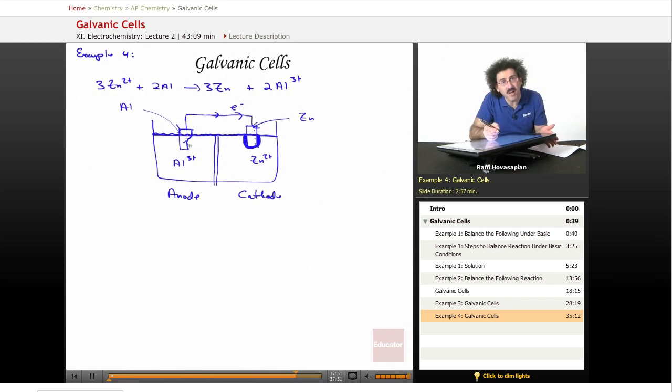The aluminum starts to dissolve. When aluminum gives up its electrons, it turns into aluminum ion. So now a bunch of aluminum ion is going into solution. The metal is turning into the ion. Here the zinc ion is turning into the metal. That's what's happening.